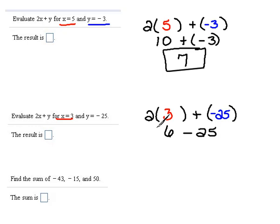Now, these signs are different, so we would subtract and keep the sign of the larger number. 25 is bigger than 6, so the answer would be negative.